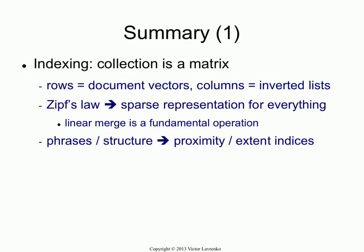Let's summarize where we are. For the last three lectures, we've been talking about indexing. The basic idea is we're looking at our collection as a matrix — rows are document vectors, columns are inverted lists. We talked about Zipf's law: most terms will occur in very few documents, which means this matrix is very sparse. When storing your inverted lists, you should use a sparse representation for the columns — basically lists of tuples — and keep them ordered because that allows you to use linear merge, which is the basic operation that keeps popping up in all the algorithms we talked about.